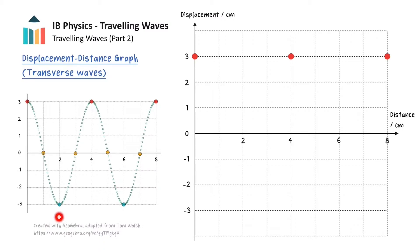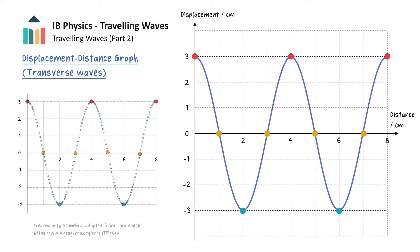The two blue points located at 2 and 6cm are at maximum negative amplitude. We can also add the yellow points where the displacement is 0. This process can be repeated for more and more points, and then a smooth curve can be drawn to connect all of our points. Notice how this graph is simply the wave frozen in time. This type of graph represents the displacement of all of the points in our medium at a specific instant of time.